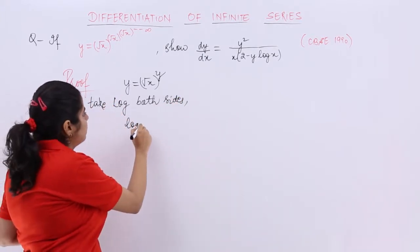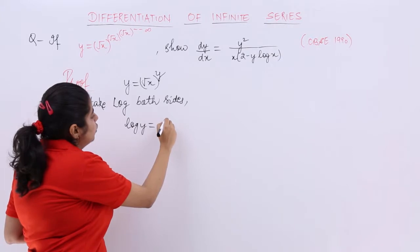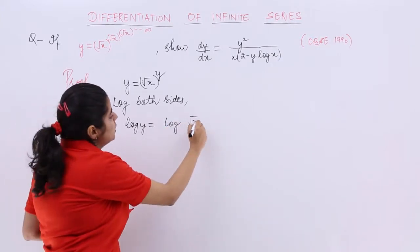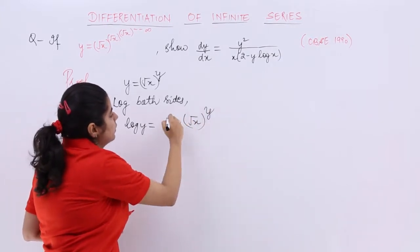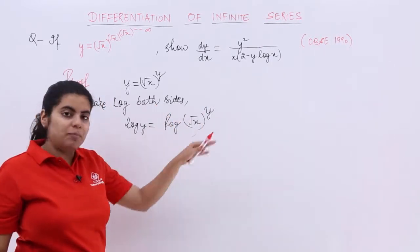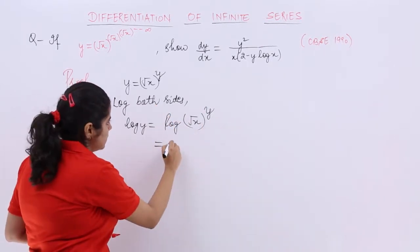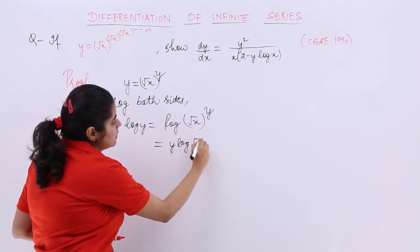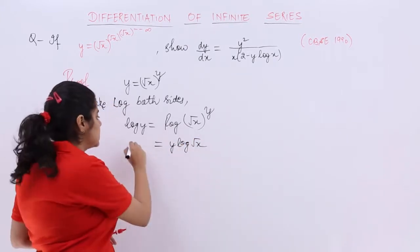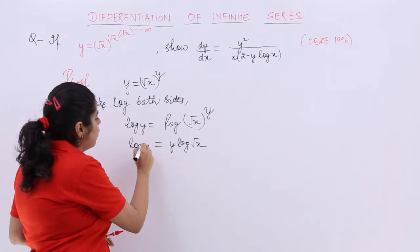You have to take log both sides and now things become what? They become log y is equal to log root x raised to the power y. Now you can always apply the power formula wherein the power comes in the front. So it becomes something like this. So the right hand side, left hand side is still log y.